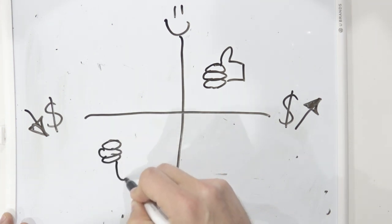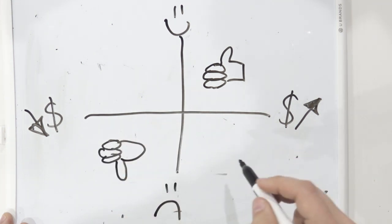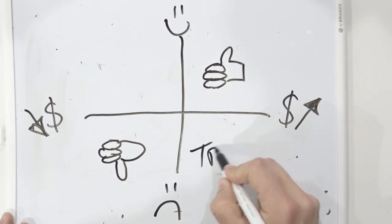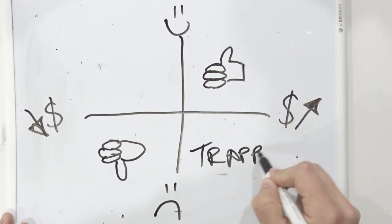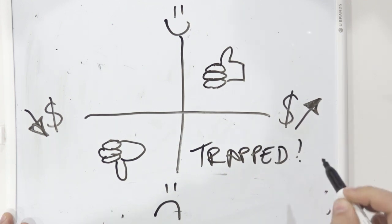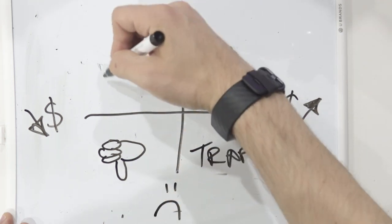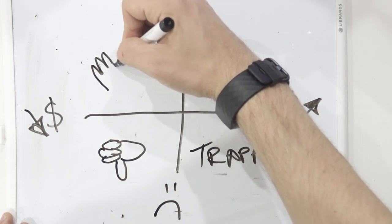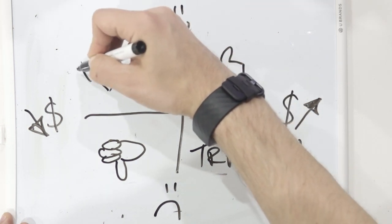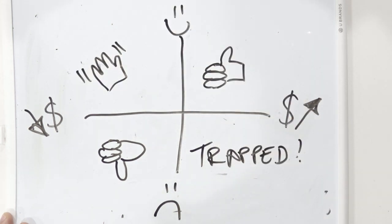But if your customers are here achieving value while also having a poor experience, they're usually not at risk of churn. They may detract you publicly, they may feel trapped, but they don't want to give up the value they're getting from your company. This could just mean there's not a lot of choice in your market. And this is where phone companies, ISPs, insurance companies live. But where you really start to get into churn trouble is right here. Great experience, no ROI. Customers will churn, but it will happen without warning because they really like you. They may even advocate for you on their way out the door.